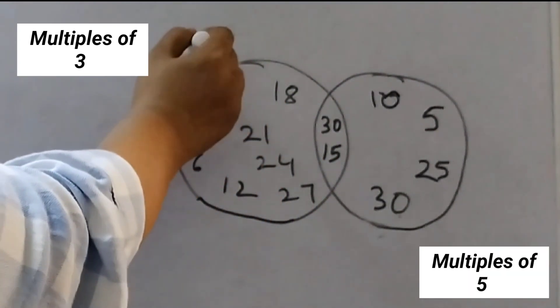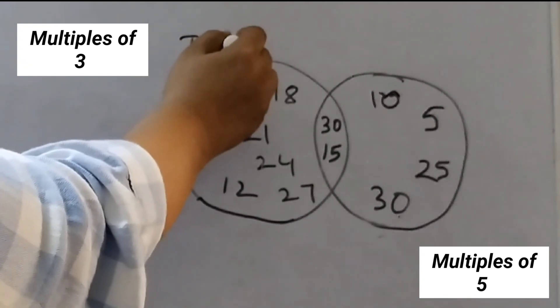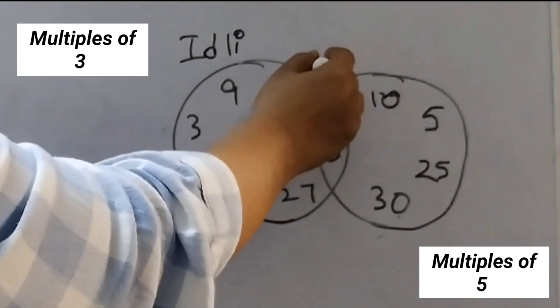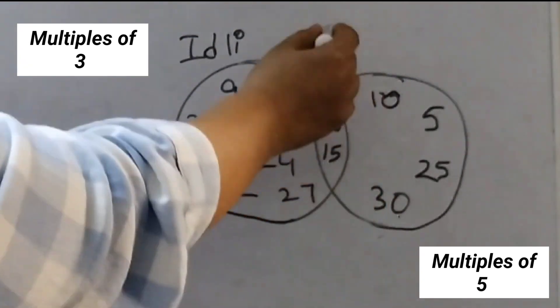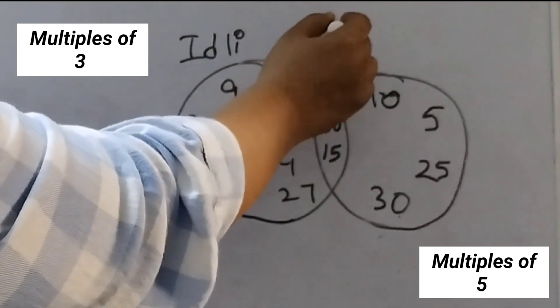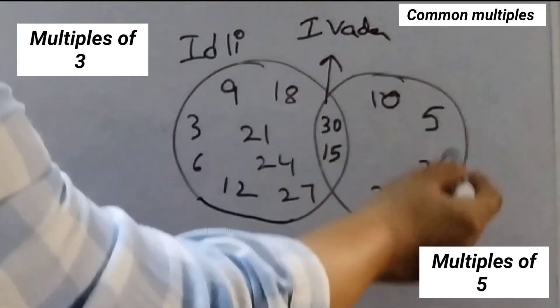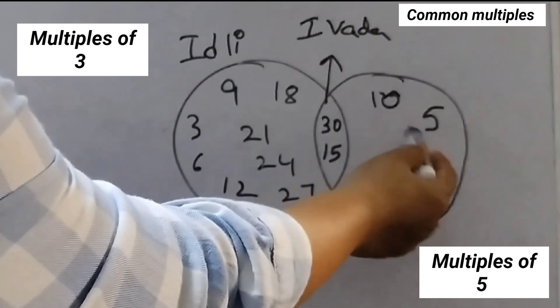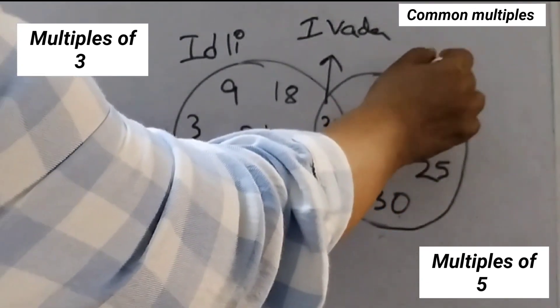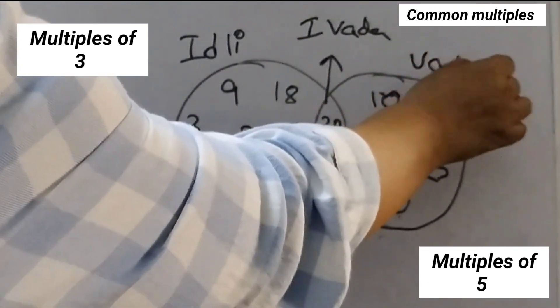So for these numbers, the children would say Idli. For these common numbers, 30 and 15, the children would say Idli Vada. And for these numbers—that is 5, 10, 25, 30—the children would say Vada.